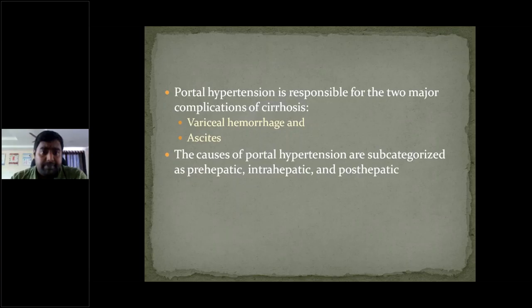Portal hypertension can be characterized into three types: pre-hepatic, intrahepatic, and post-hepatic. This division depends upon where the pathological lesion is. If the pathological lesion is before the liver, it is pre-hepatic; within the liver, it is intrahepatic; and behind the liver, it is post-hepatic.